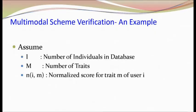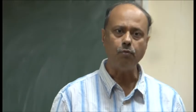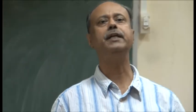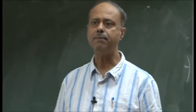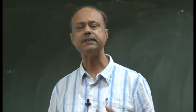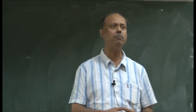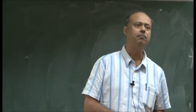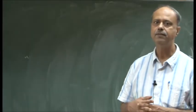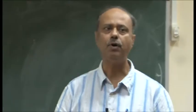Today, we want to discuss how, given a multimodal environment, we look at having two or more biometric traits and how to compute the false acceptance rate and false rejection rate. I know the false acceptance rate of one system based on one type of database, and another biometric trait's false acceptance rate and false rejection rate are known based on another database. Now, how do we combine these to get the false acceptance rate and false rejection rate for the combined system?